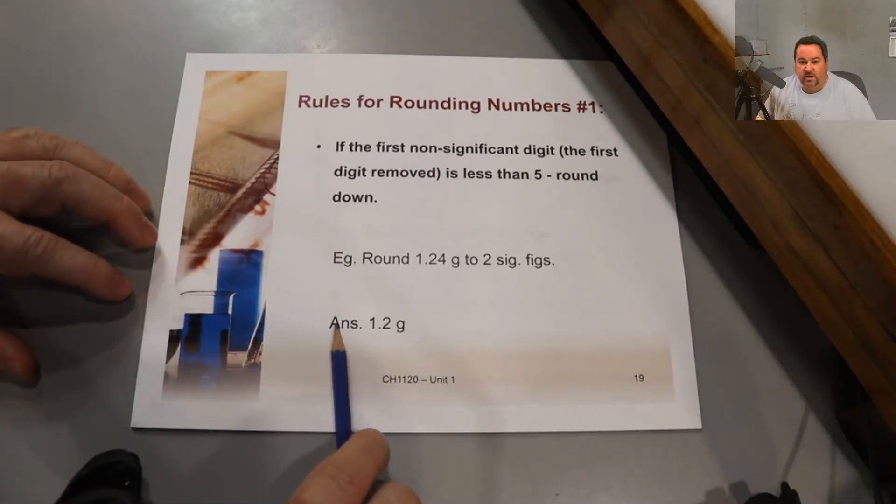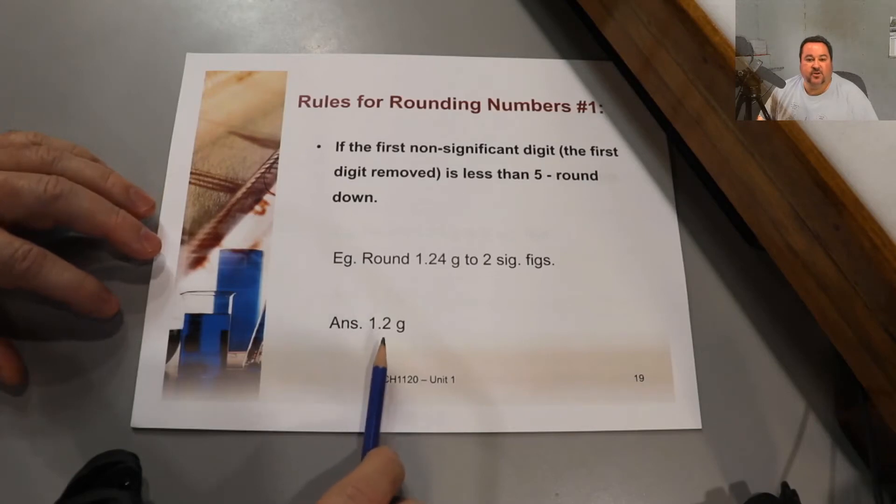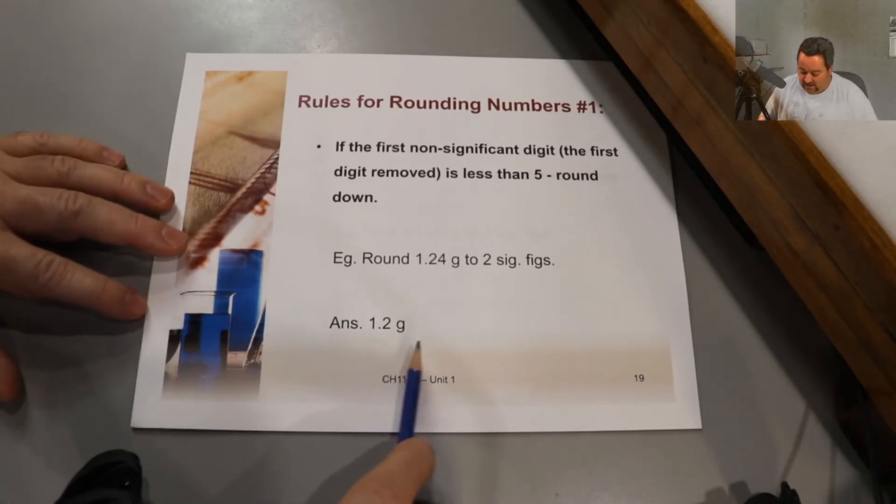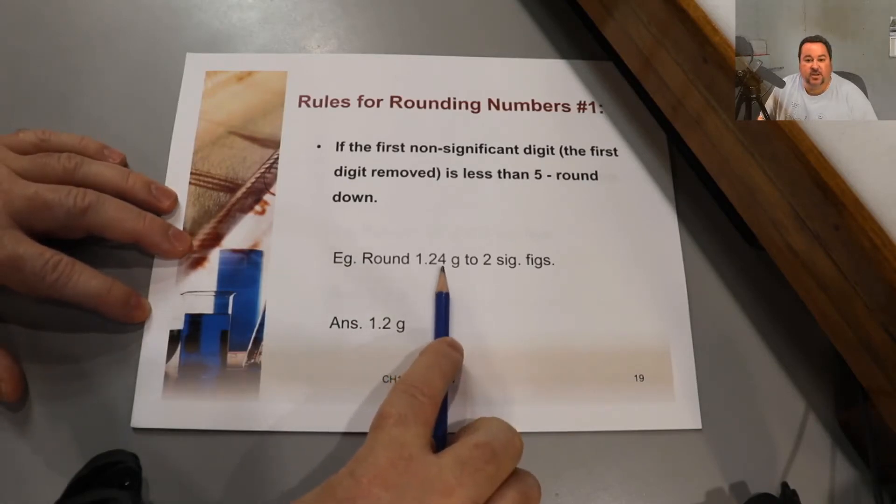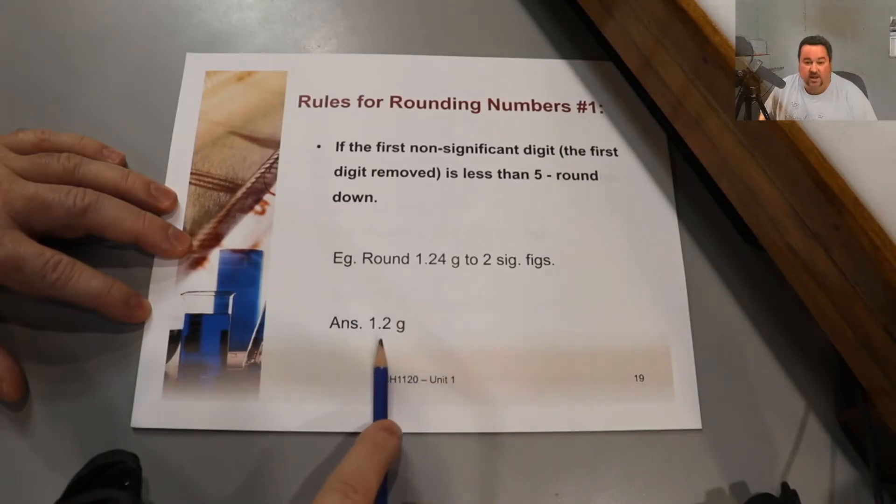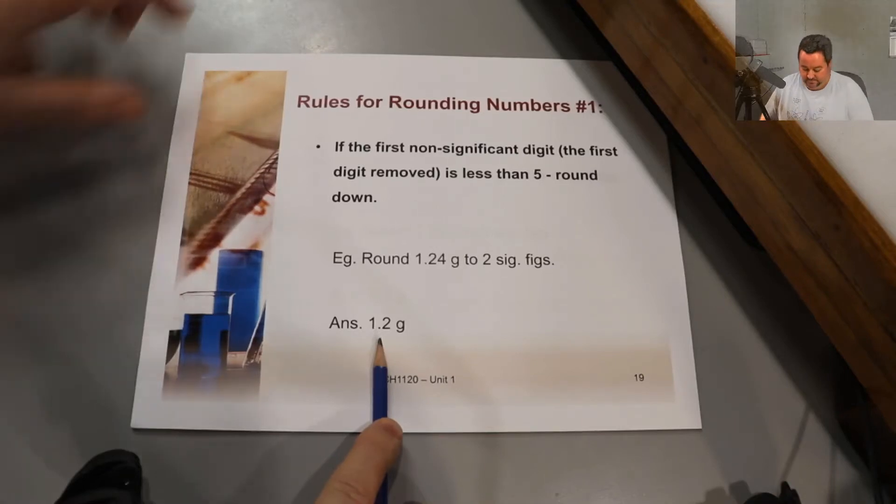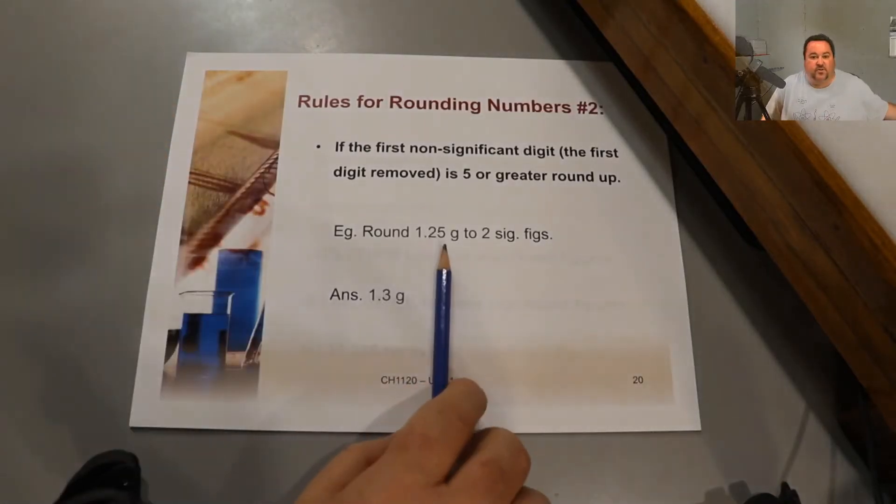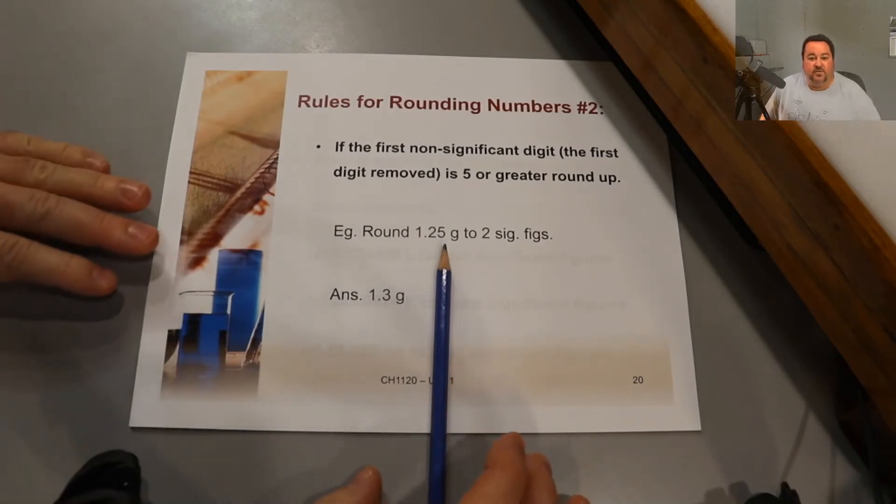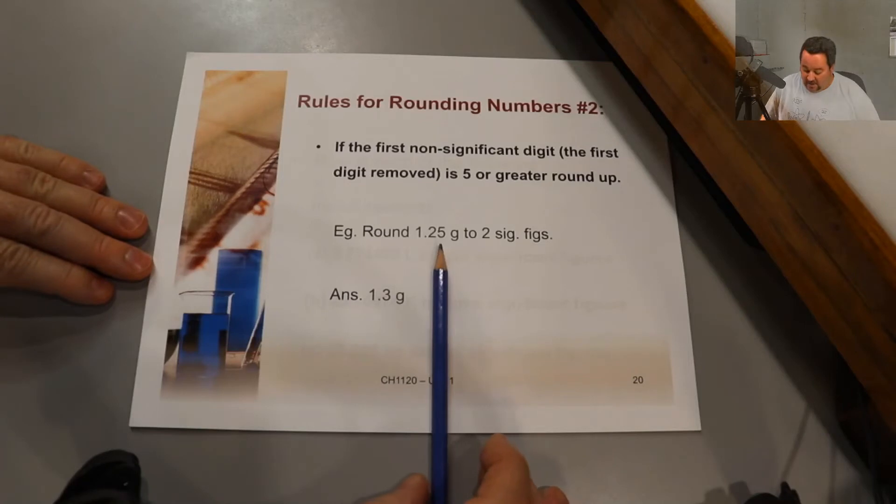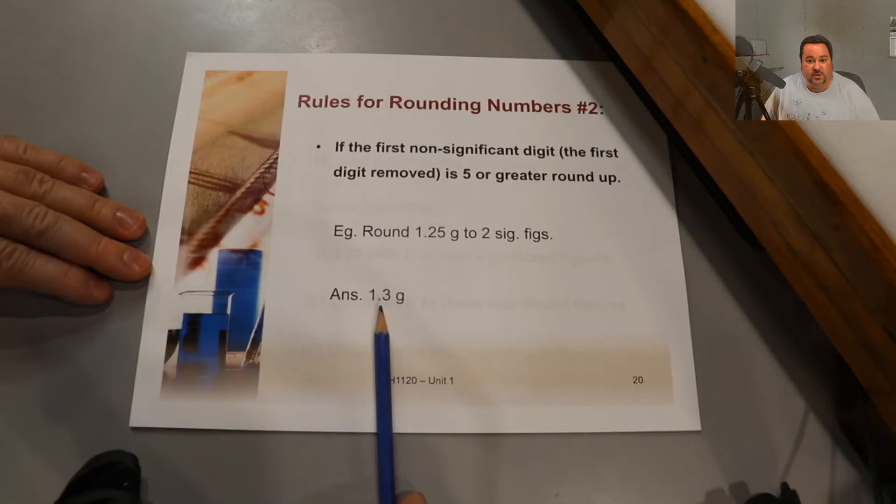When recording measurements, it's also necessary to round our results. If the first digit eliminated when you're rounding is four or less, we call that rounding down, but we just eliminate the digit that we're rounding off. If the first digit to be eliminated is five or greater, we call that rounding up and we're increasing the last digit by one. So this answer is being rounded up to two significant figures.